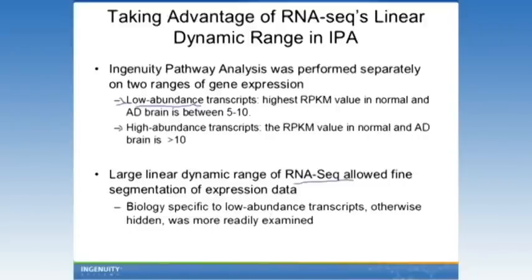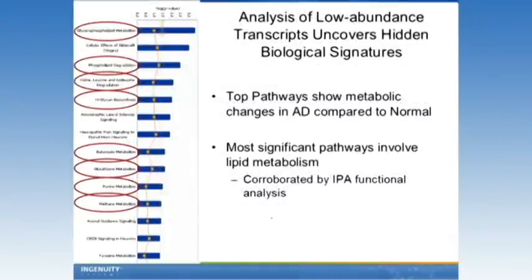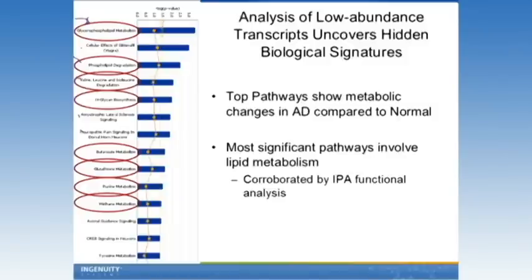If we take these low-abundance transcripts and ask what biological picture this paints, we see a different set of pathways coming up — primarily metabolic in nature. You can see circled in red: glycerophospholipid metabolism, phospholipid degradation, valine/leucine/isoleucine degradation, and others. So just a number of metabolism pathways coming up. There are still some pathways hanging over from previous analyses, including some neurological or nitric oxide pathways.